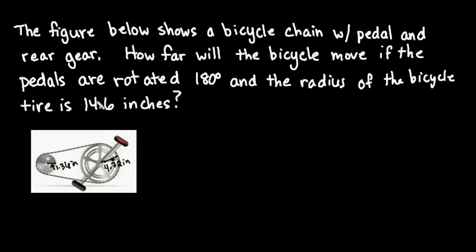For this video, I want to walk you through the following scenario. What we have below is a picture of a bicycle chain with the pedal and the rear gear. The back tire has a radius of 14.6 inches and is going to spin when this gear is rotated.